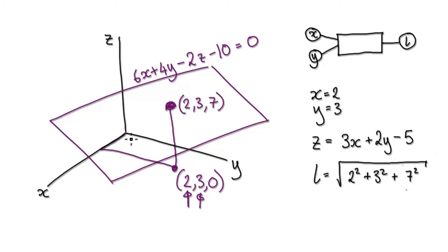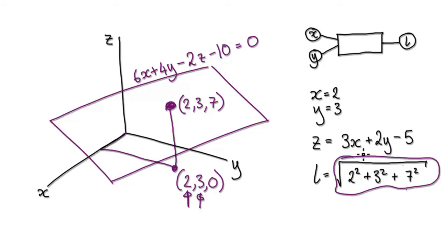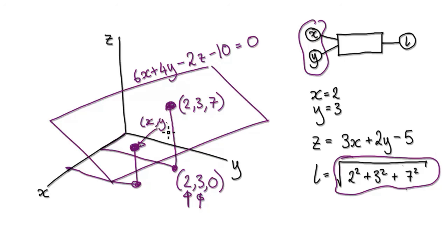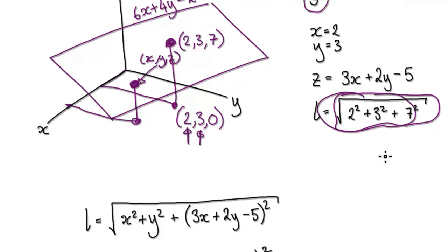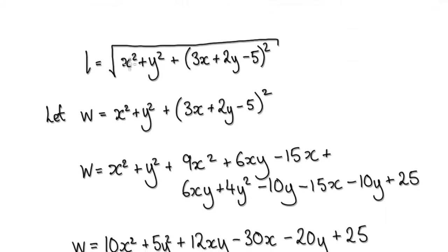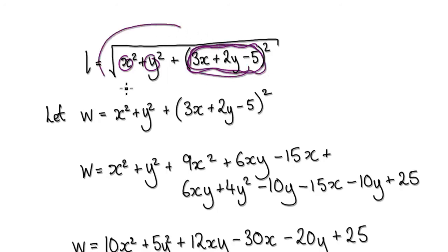Once you know (2, 3, 7), you can use Pythagoras in 3D to work out the distance from the origin. So the diagonal length is given by the square root of X squared plus Y squared plus Z squared, where Z is your elevation from the plane equation. You square the Z value and that gives you the length.